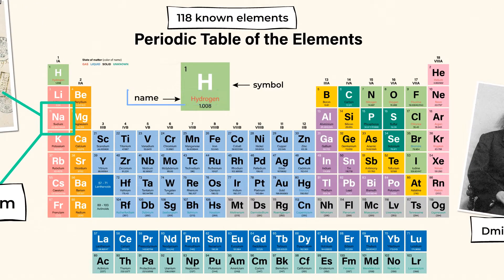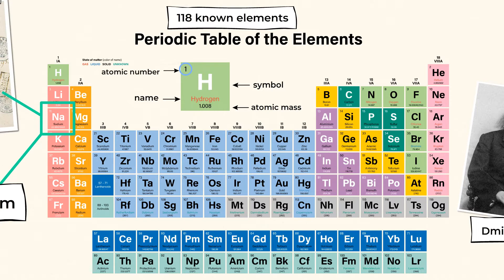Each element also has a decimal listed under each chemical symbol. This value is the element's atomic mass — it represents the average mass of an atom of that element. Each element not only has an abbreviation, it also has an atomic number, which is usually found in the top left corner.